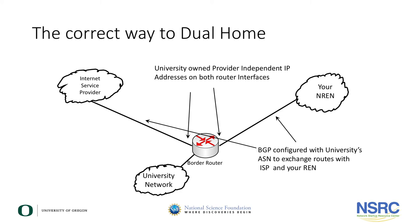You can see from this diagram the proper way to dual home. This university has their own provider independent IP address space and has allocated addresses out of that space for each of the interfaces connected to the NREN and the ISP, and they have configured BGP peering with both the NREN and the ISP.